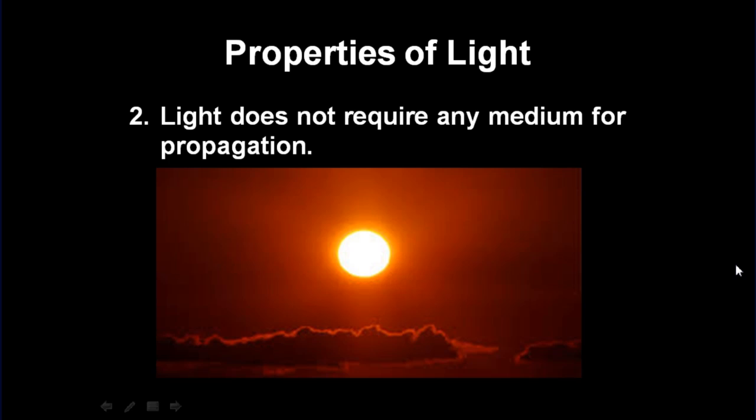Light does not require any medium for propagation. That is the reason why light from the sun reaches earth through vacuum where there is no medium.